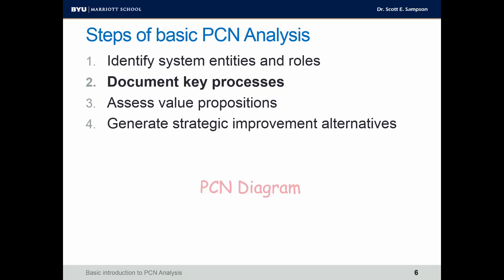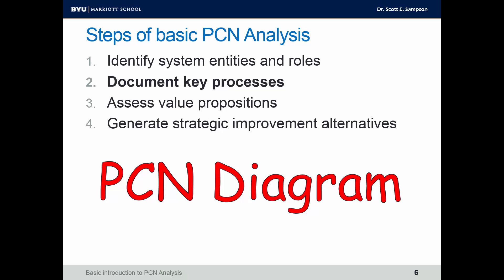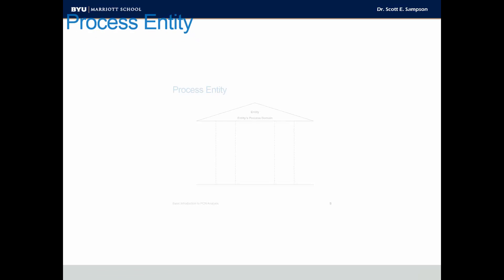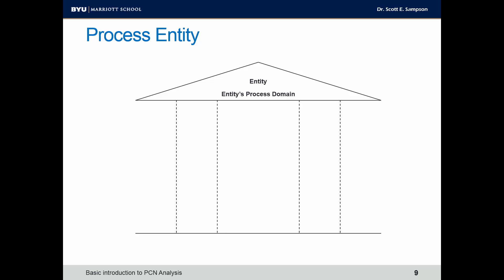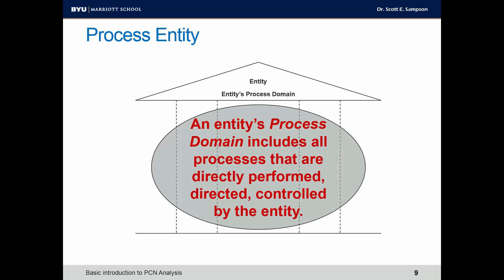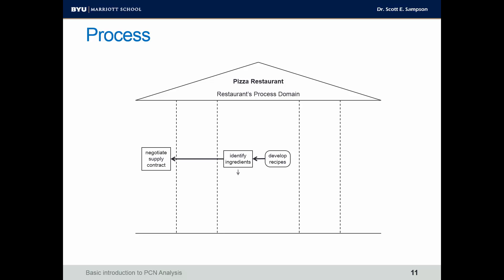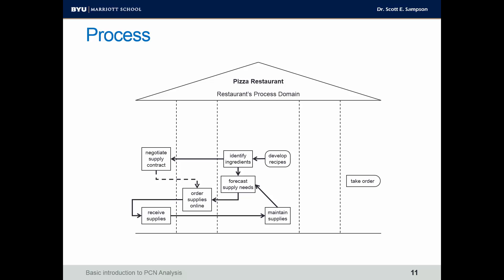Step two is to document key processes, and we use a PCN diagram as the tool for this. Elements of a PCN diagram include process entities, process domains, and process regions. A process entity is any entity that participates in a process, represented through this shape. An entity has a process domain that includes all processes performed directly or controlled by that entity. In the case of our pizza restaurant, parts of the process within the domain include developing recipes, identifying ingredients, negotiating supply contracts, forecasting supply needs, ordering supplies online, receiving those supplies, maintaining supplies, taking an order, cooking the pizza based on the customer's order, and preheating ovens.